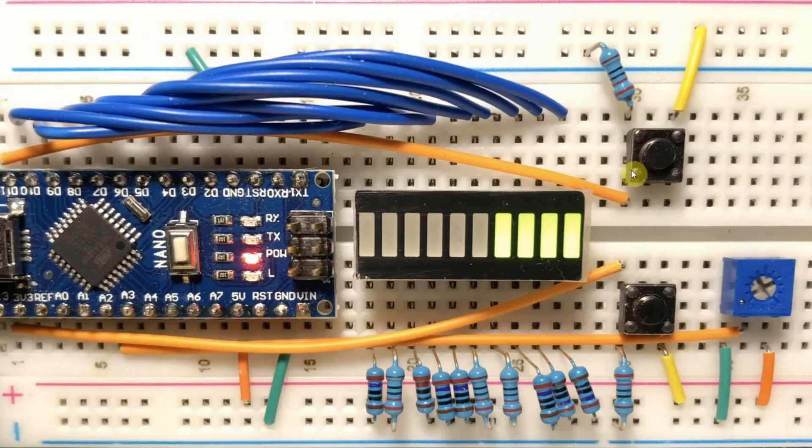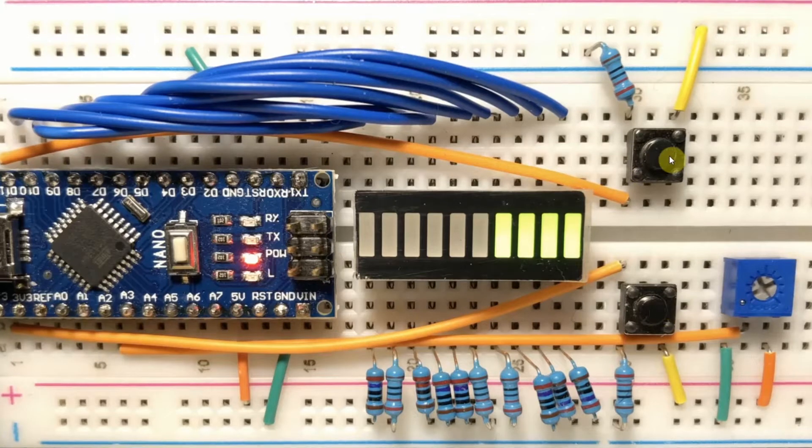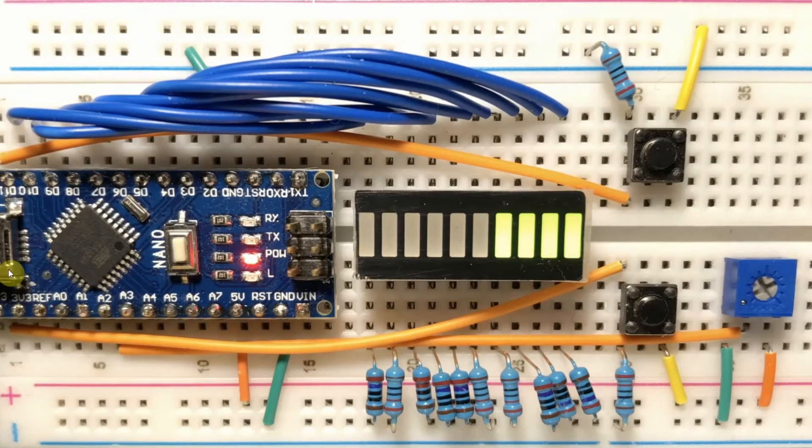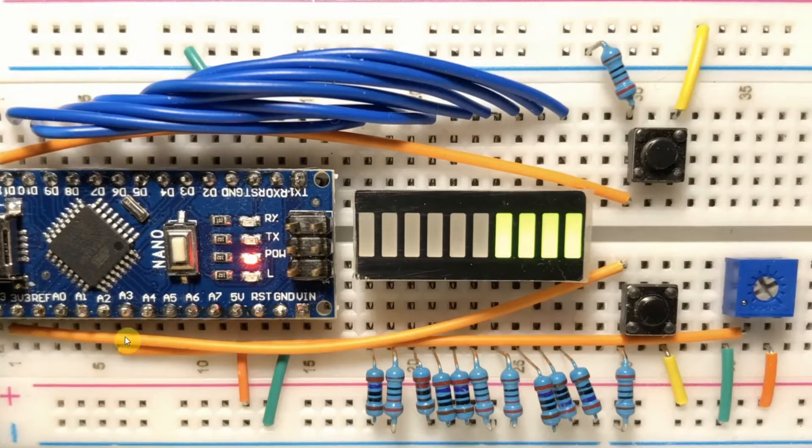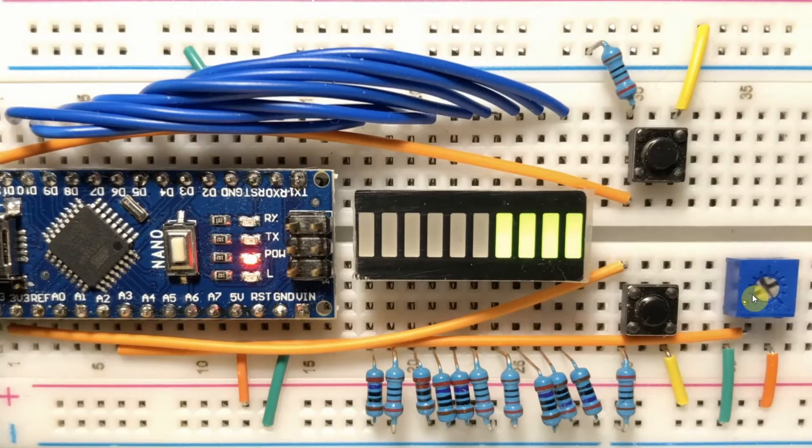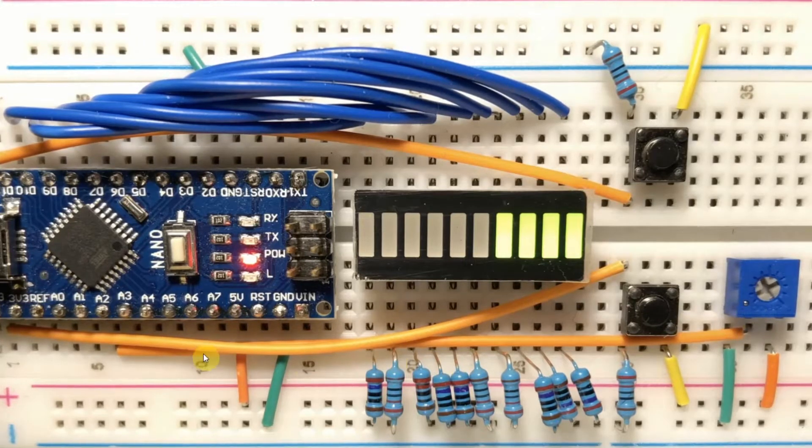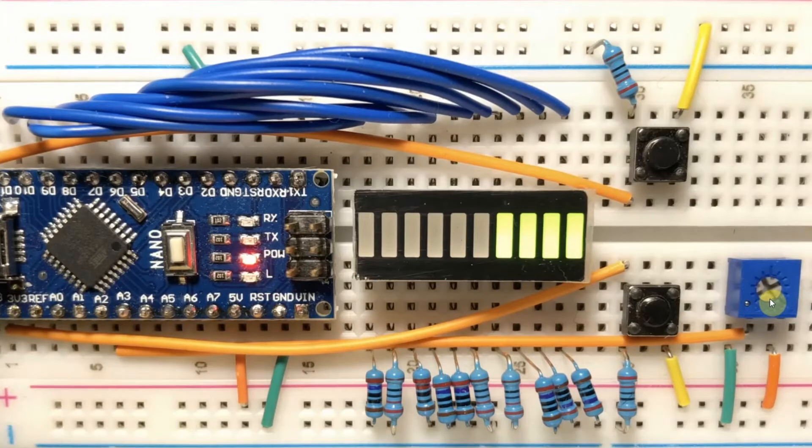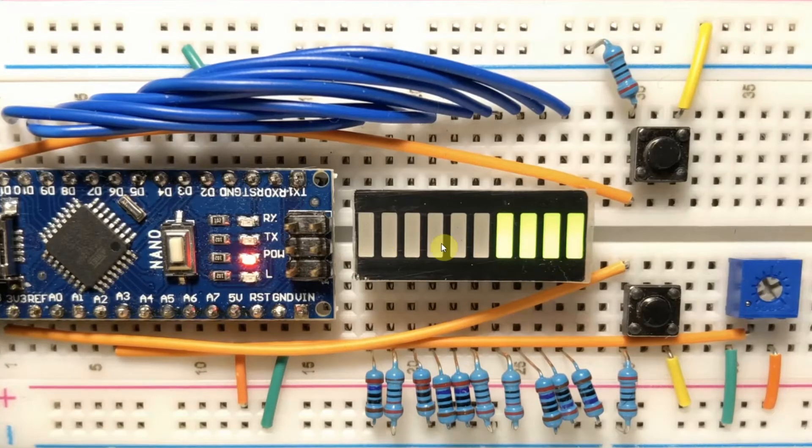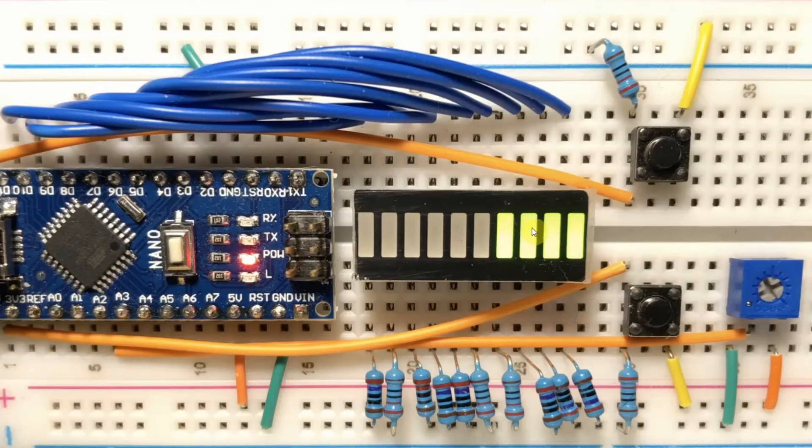We also have two switches which are connected to pins 12 and 13. A 10K potentiometer is connected to analog pin A2. This potentiometer is used to control the level of the bar graph.